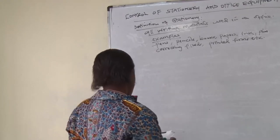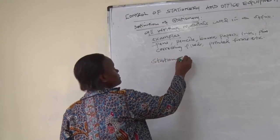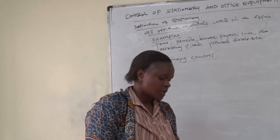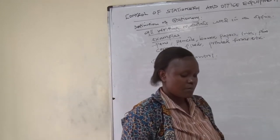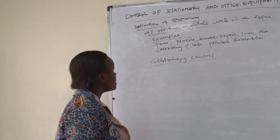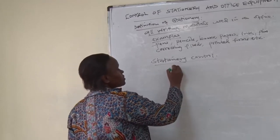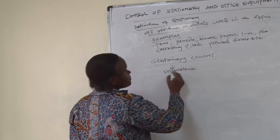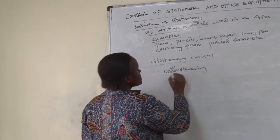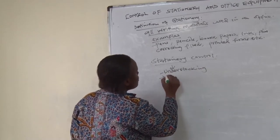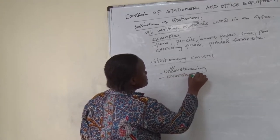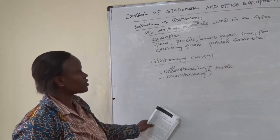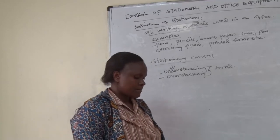I would like us to look at how you control stationery. The following guidelines can improve the usefulness of the stationery in the office. When we say control, we mean making sure you don't have too little stock, which we call understocking, and you don't have too much, which we call overstocking. So you have to avoid both. Avoiding understocking and overstocking is what we mean by stationery control.